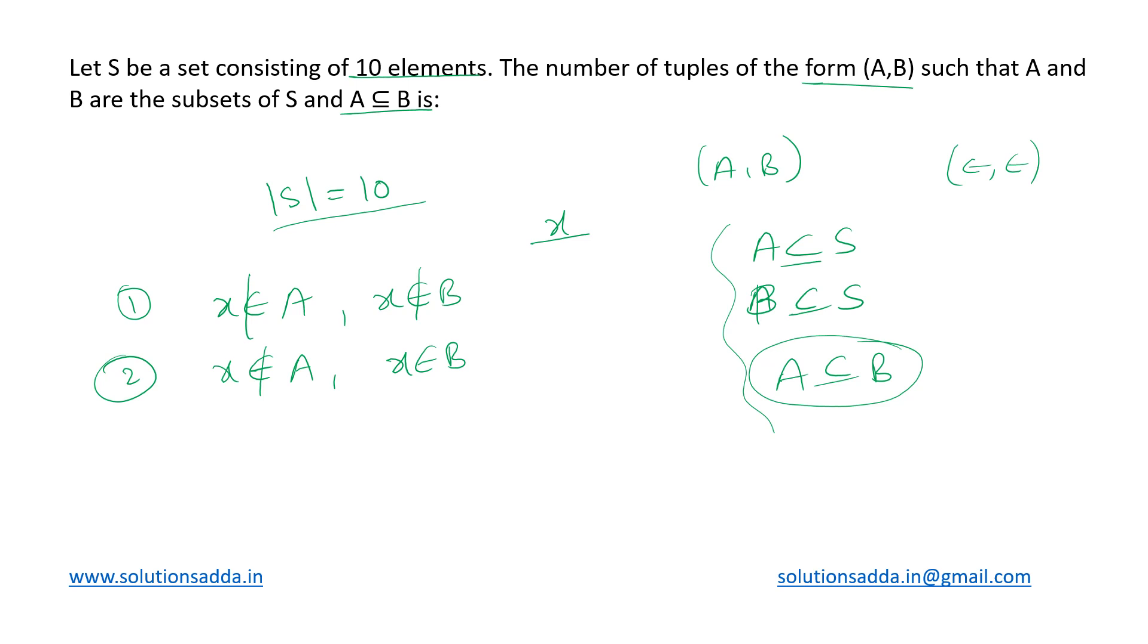The third choice would be that x belongs both to set A as well as set B. Both can be equivalent as well—it is possible that if all the numbers choose to be part of both A and B, we'll end up with equivalent sets. That is also allowed because we don't need a proper subset. So these are the three possible cases for every element.